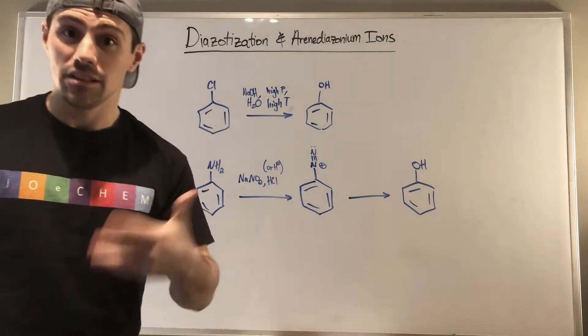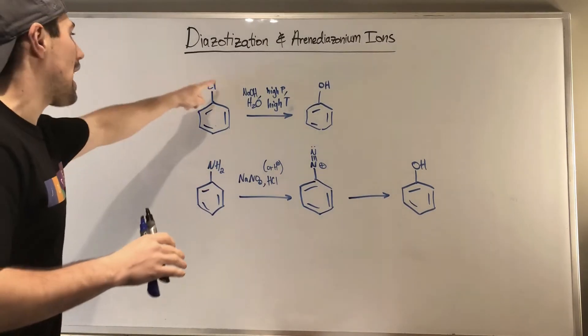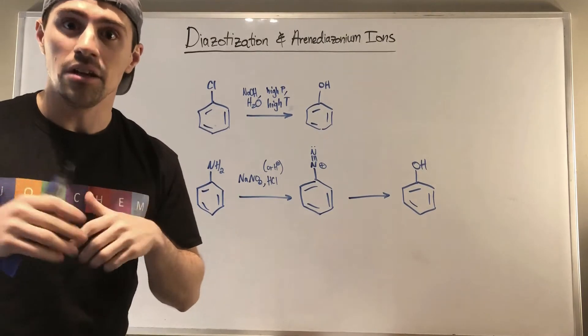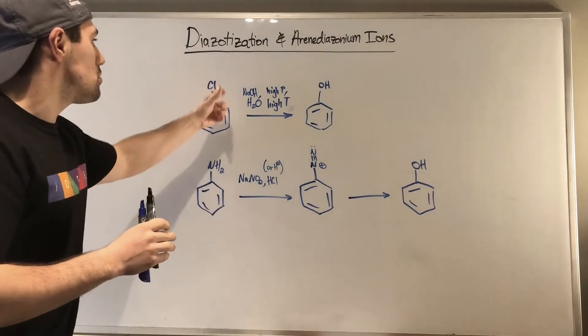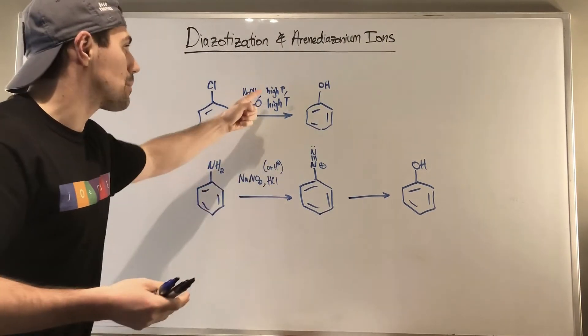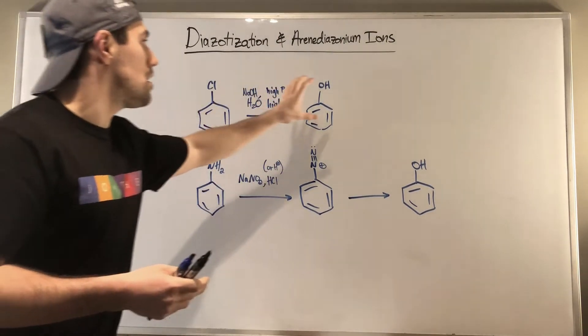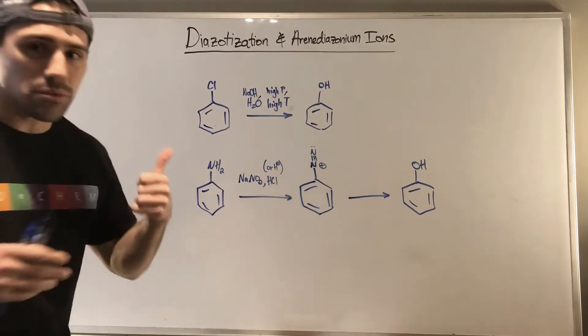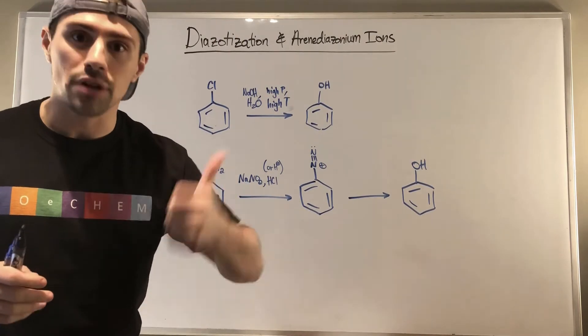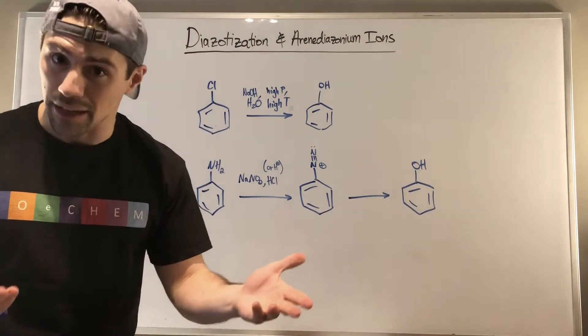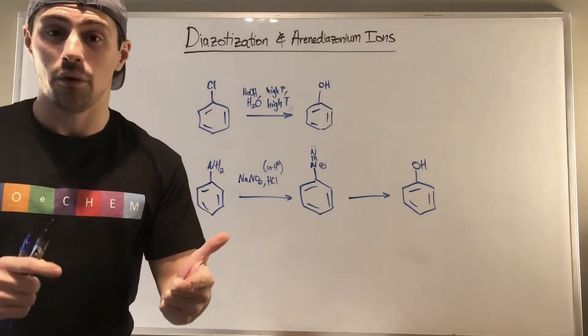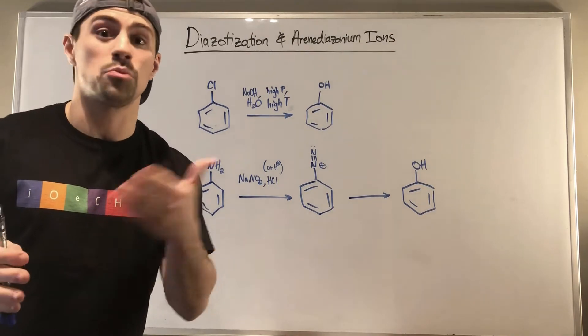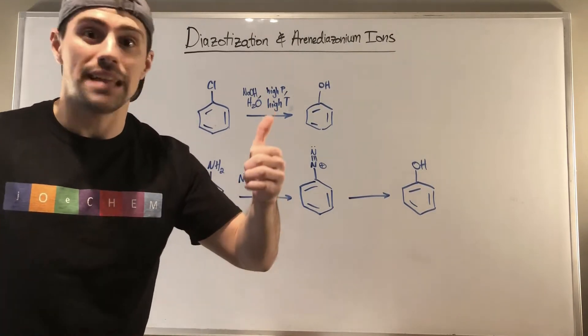In the previous video, we saw how when using a halo-arine, meaning a halogen directly attached to an arocarbon inside a benzene ring or aromatic system, we could use high temperature and pressure to do substitution and create a phenol. So this works, but we need to really crank up the temperature and pressure for our reaction conditions to make it happen, so not ideal.